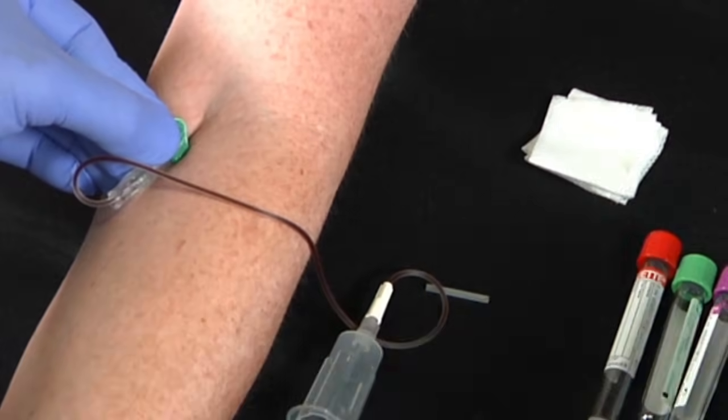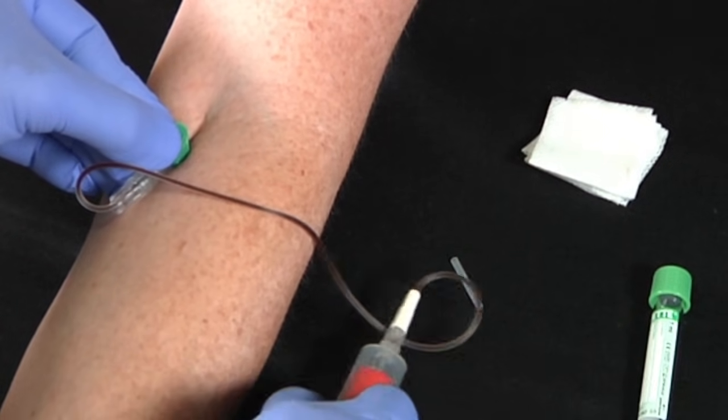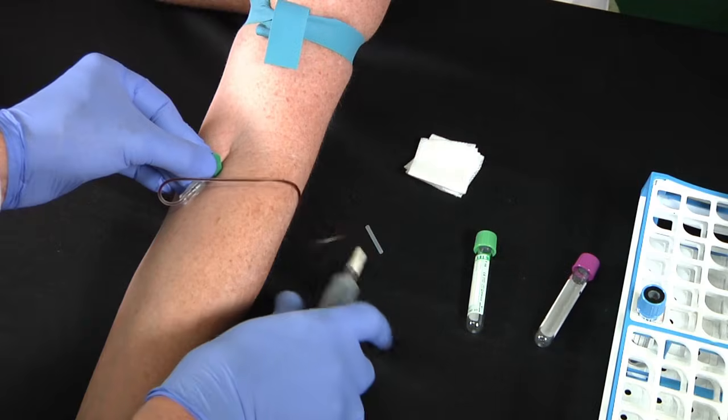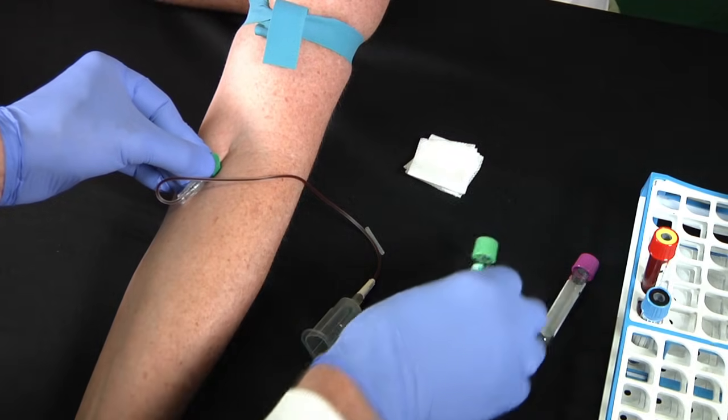Now just like any other tube holder draw, you'll fill the tubes in the proper order of draw. We have a video on that in our technique playlist. Invert each tube once or twice before going on to the next tube. We'll complete the mixing later.